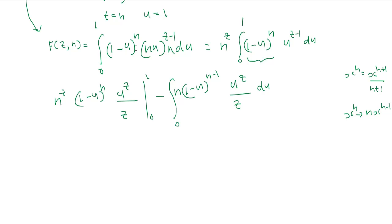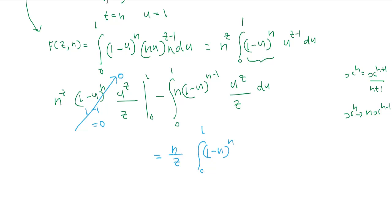Applying the limits from 0 to 1 to the first term: at the upper limit, (1 minus 1) equals 0, so the term vanishes; at the lower limit, u equals 0, so that term also vanishes. The first term vanishes completely. We are left with f(z, n) equal to n over z times the integral from 0 to 1 of (1 minus u) raised to n minus 1, times u raised to z, du.